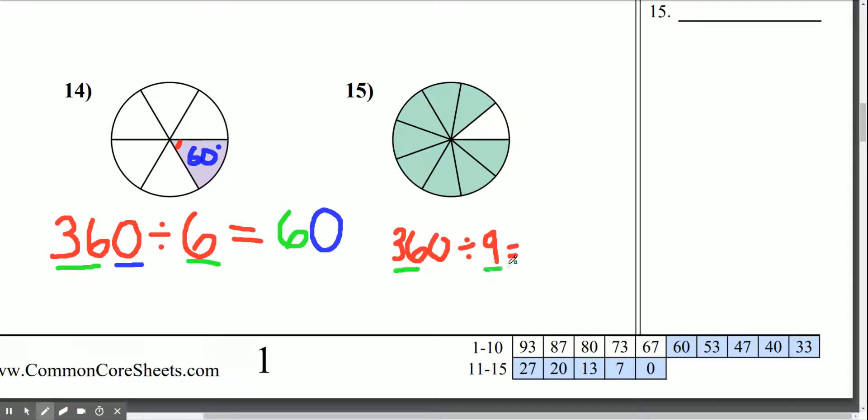36 divided by 9 is 4, and there's one 0, so I'm going to place the 0. 360 divided by 9 is 40.